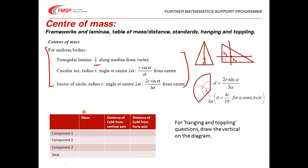I strongly recommend using a table of values when working through centre of mass questions. List the components of the composite body in the first column with the total underneath. Put the individual masses and the distances from the axis you're considering in the next column — if working in two dimensions, list distances from both axes. For hanging and toppling questions, don't forget to draw the vertical onto the diagram so you know which angle you're looking for.